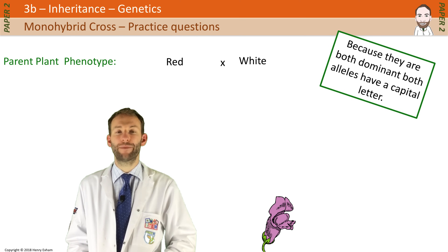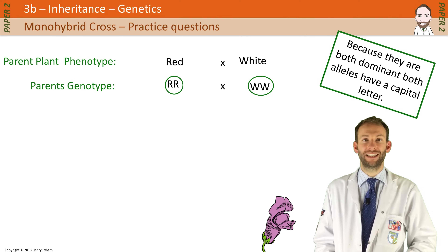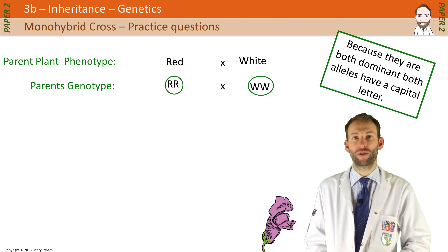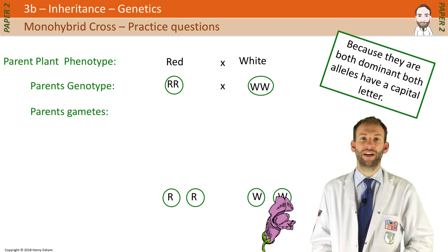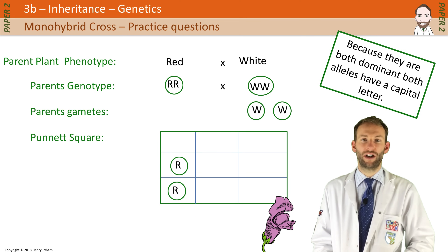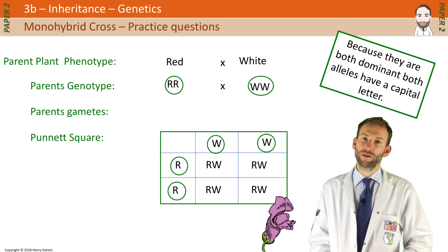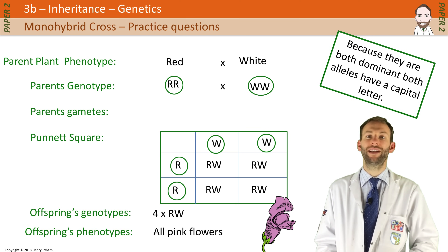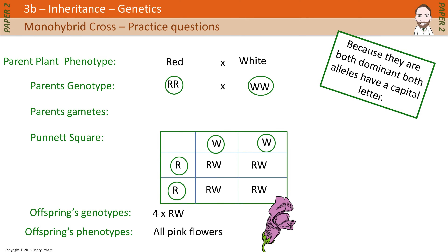Let's cross a red snapdragon plant with a white snapdragon plant. In this case, the red is big R, big R and the white is big W, big W, because they are both dominant — they're both going to contribute. One is not recessive and one is not dominant. So when you cross these together, you end up with R, W and R, W for each of the four offspring. Now if red was dominant, they'd all be red; if white was dominant, they'd all be white. But because both contribute, you end up with all pink flowers. That's how co-dominance works.